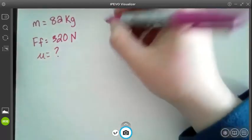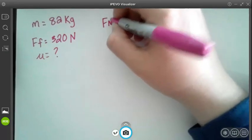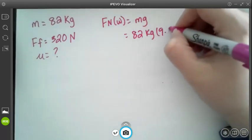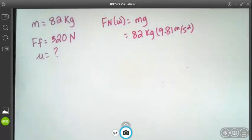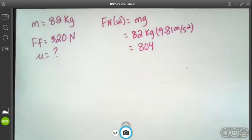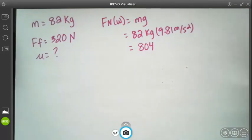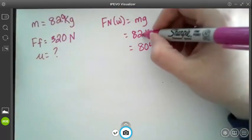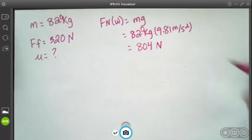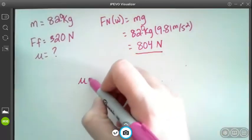That's our given. So we have to do, this is a two-step problem. First we have to find our normal force which is weight, which is mg, which would be 82 kilograms times 9.81 meters per second squared. So now we use this number to find our mu, so mu equals our frictional force over normal force.